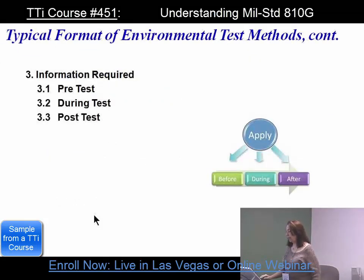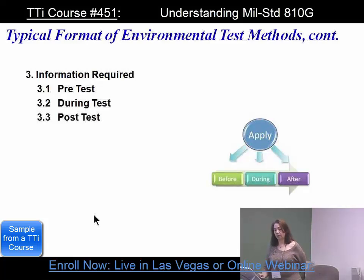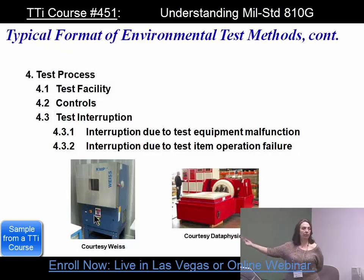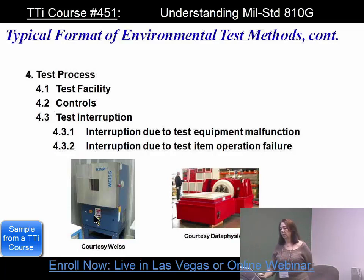The typical format of environmental test methods includes information for pre-test, during test, and post-test — all of which goes into your test report. The test process covers what your test facility is: it could be a chamber or a shaker, whatever it takes to get the test done properly. The controls include what type of controller and software, and any test interruption, whether due to test equipment malfunction or test item operation.